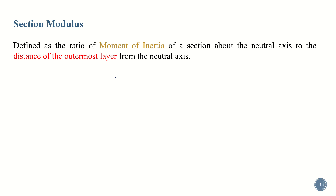In this video we will discuss section modulus. Section modulus is defined as the ratio of moment of inertia of a section above the neutral axis to the distance of the outermost layer from the neutral axis. Basically it is the ratio between moment of inertia and the distance of the outermost layer from the neutral axis, where that distance is denoted by the symbol y and moment of inertia is denoted by the symbol I.